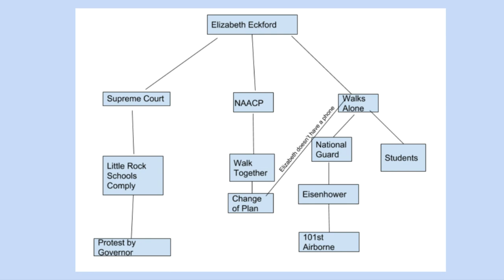The conflict is obviously there with the National Guard, the students, the other people, and the governor all protesting those students going to school. The biggest complication in this story is that change of plan and Elizabeth not having a phone to find out about it. The main character is Elizabeth, and I think this story will hit home for students because she is their age — she's 15, and this lesson is designed for juniors in high school, so 16-year-olds, pretty close to their age — putting themselves in the shoes of someone who had to face that just to go to school.